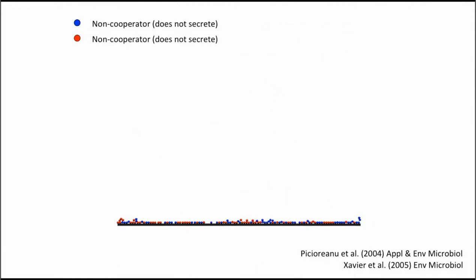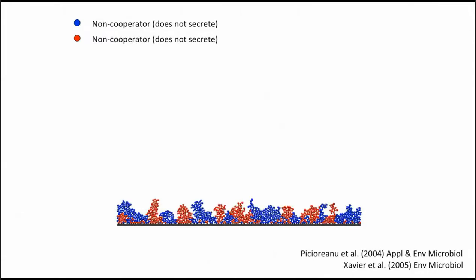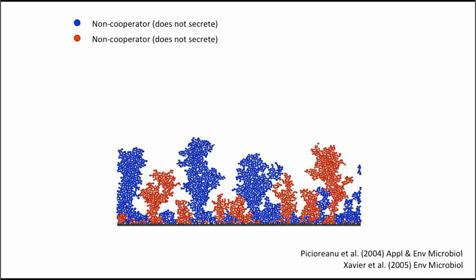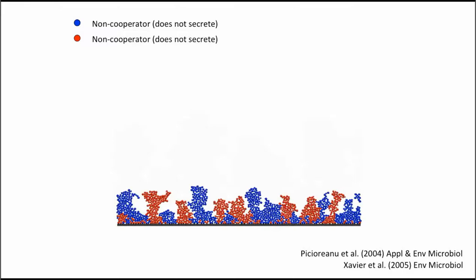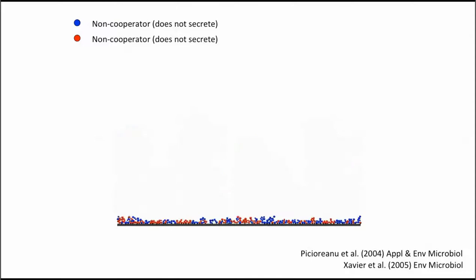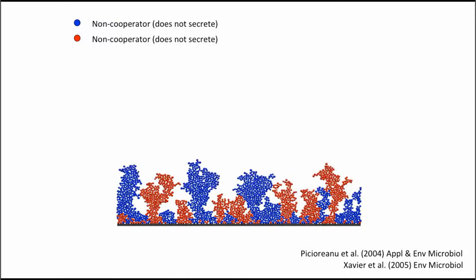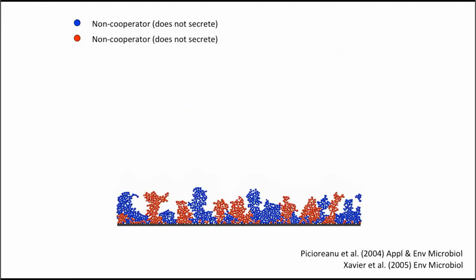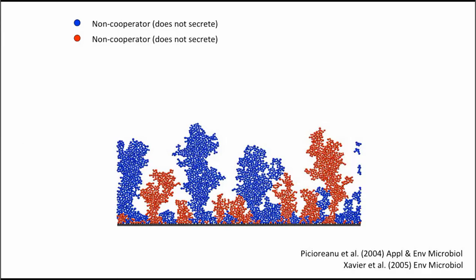How do these spatial patterns form in the first place — how do we get mixed versus segregated groups? We used computer simulations developed previously in Kevin's lab. In those simulations, you have a solid surface with cells of two different colors — identical, not secreting anything. Nutrients diffuse from the top, cells take them up, grow in size, divide, and push neighboring cells. This continues for many iterations, producing large populations with spatial patterns. We can change nutrient concentrations, diffusion of molecules, and growth rates of different types to explore the parameter space.